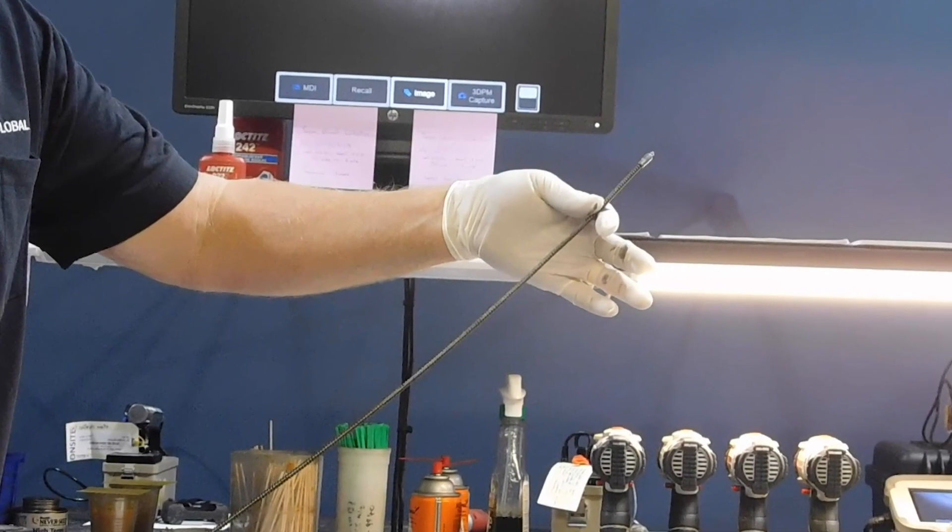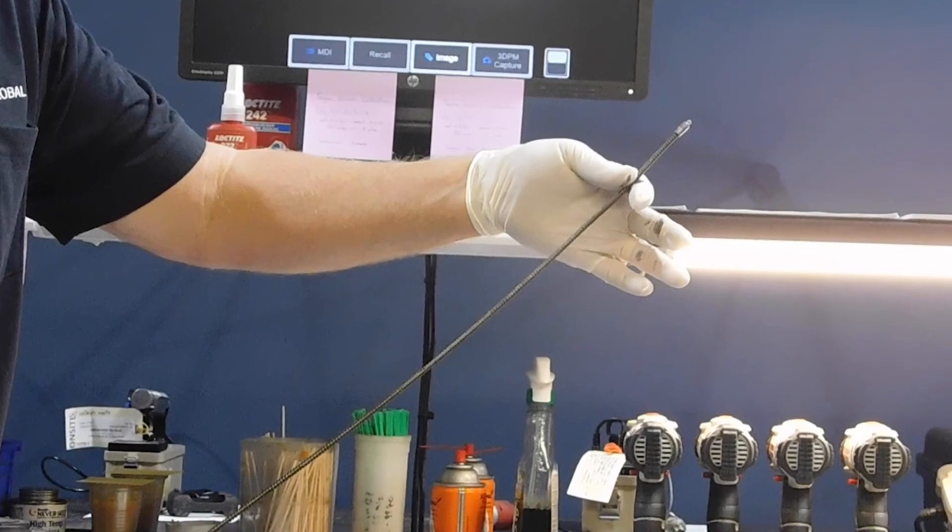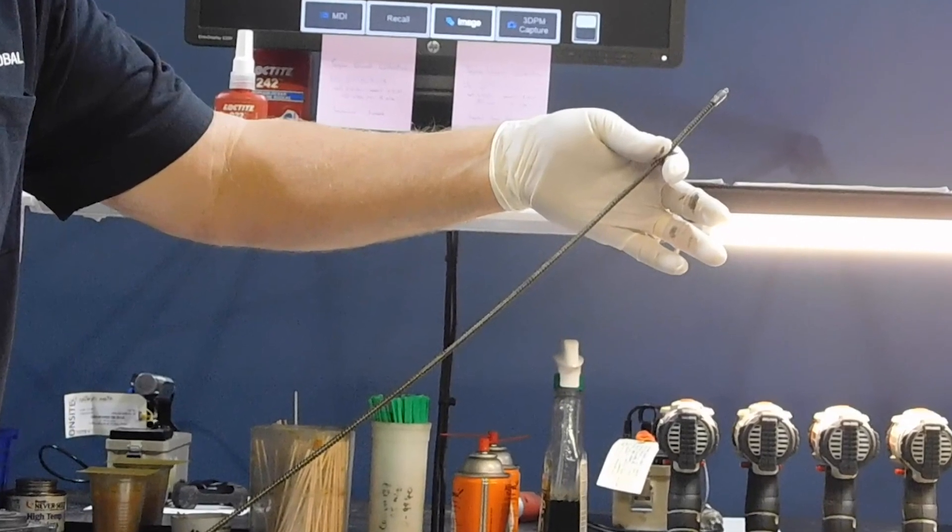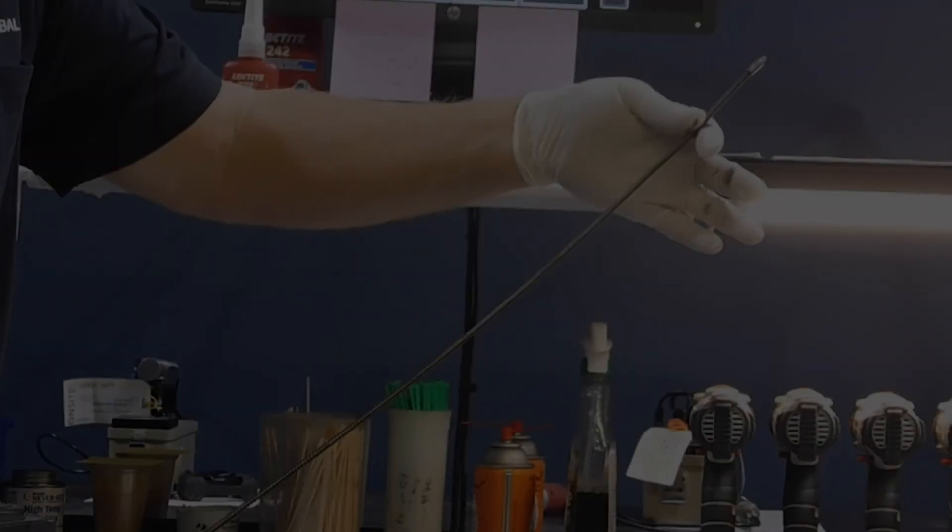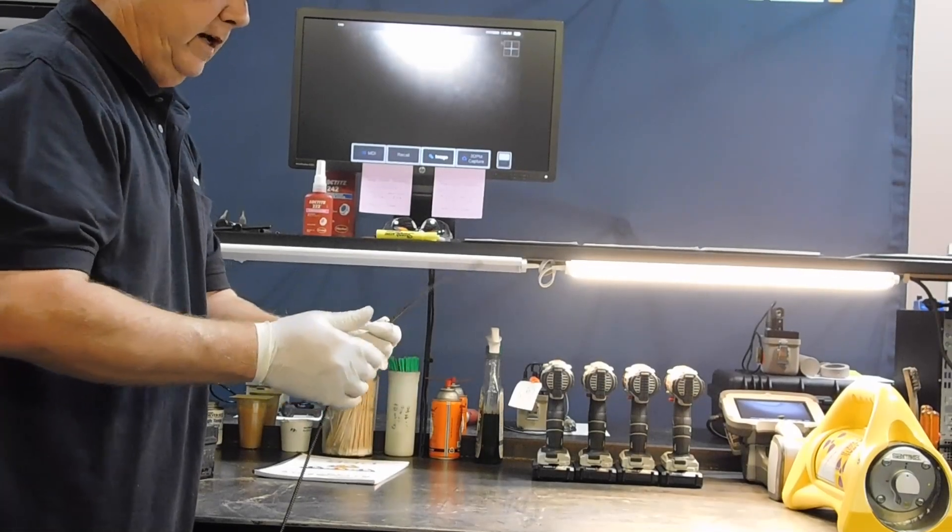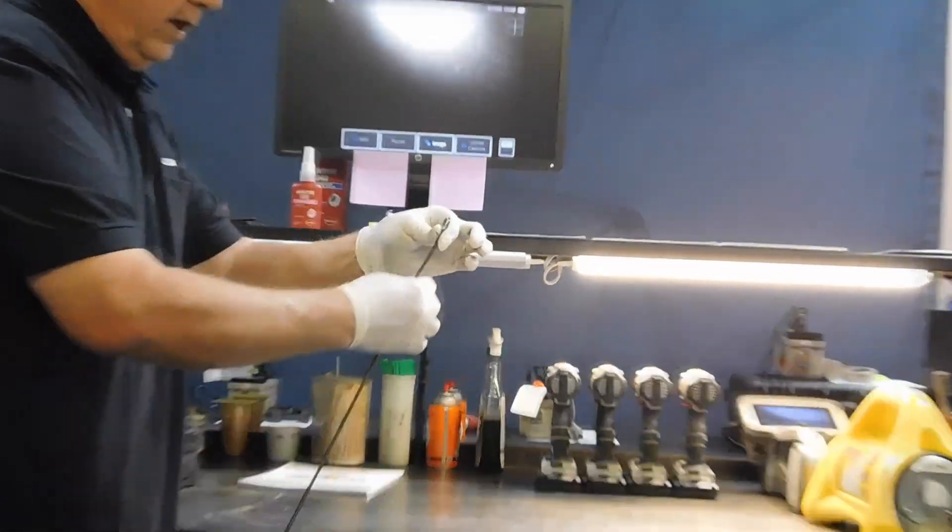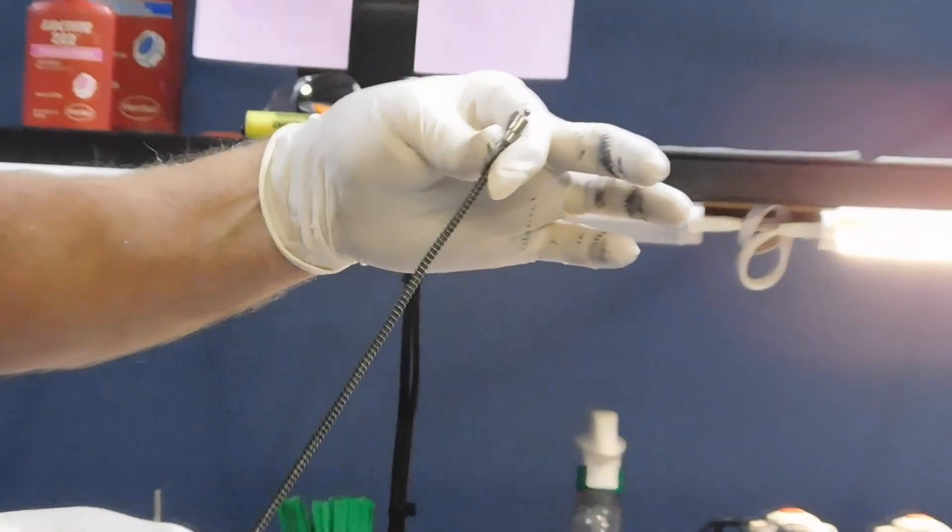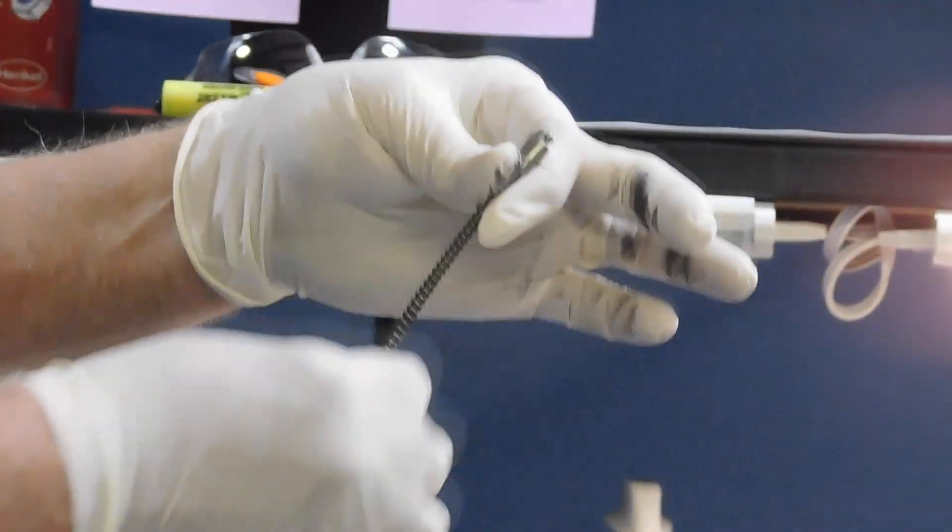What I suggest is crank out about 20 inches of drive cable, and the inspection points you want to check on this drive cable is the flexibility of it. Look for rust, oxidation, a little lubricant on it. Make sure it's clean.